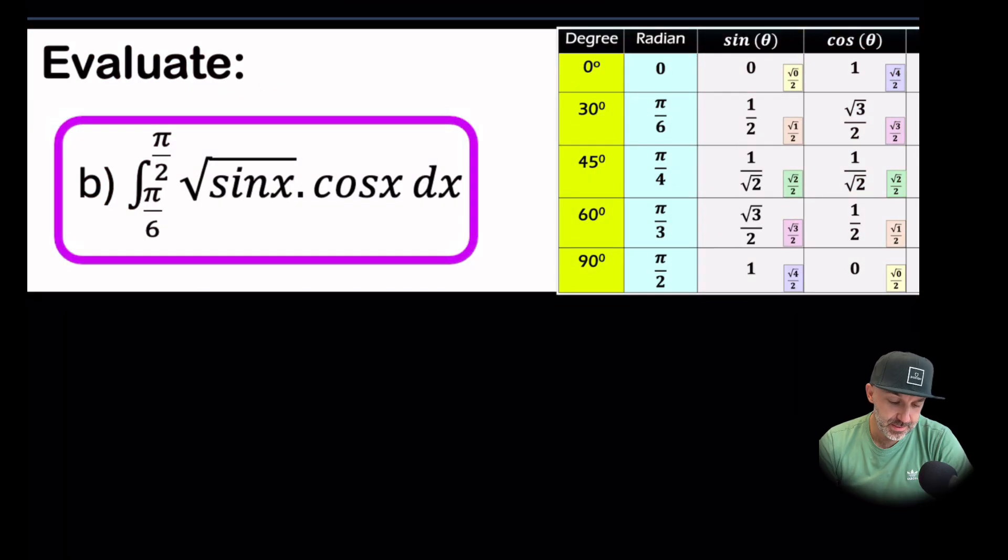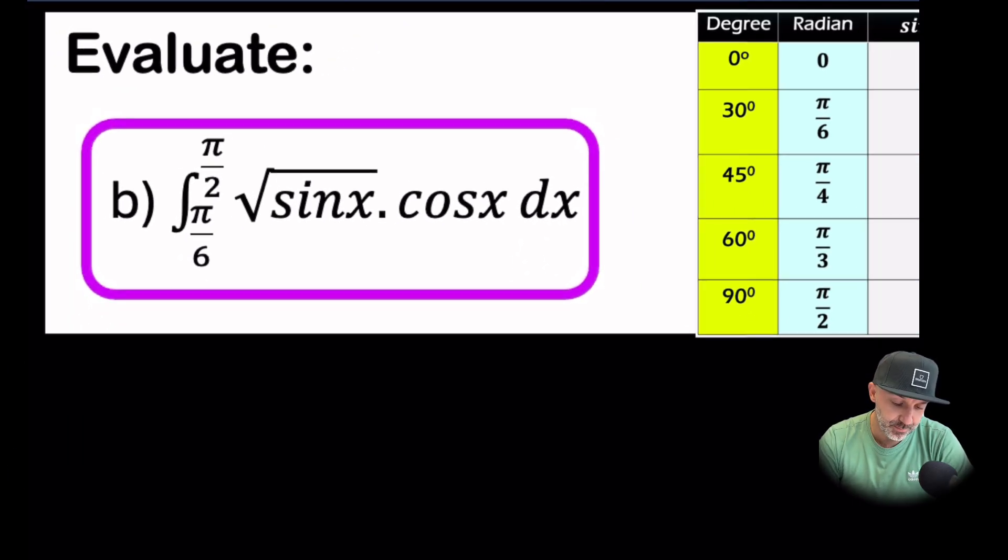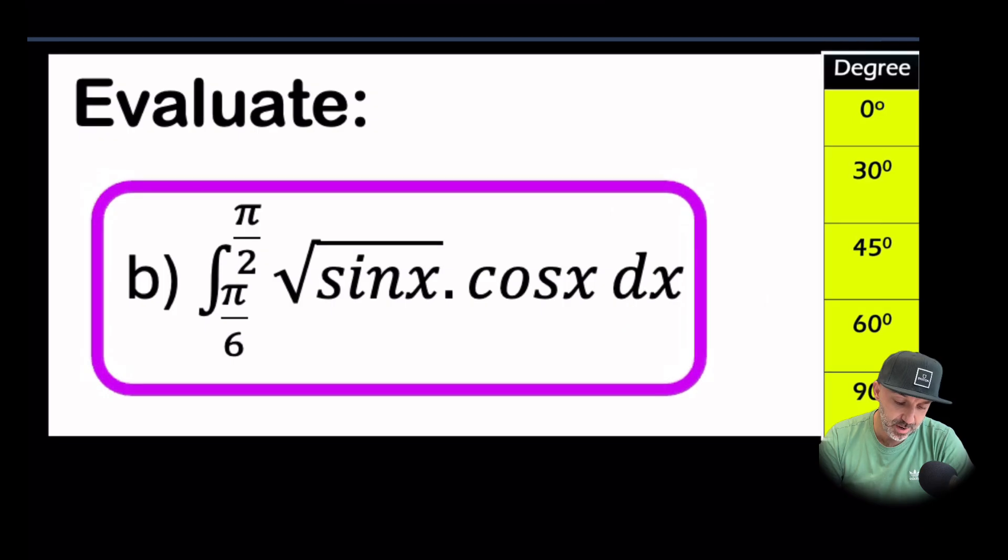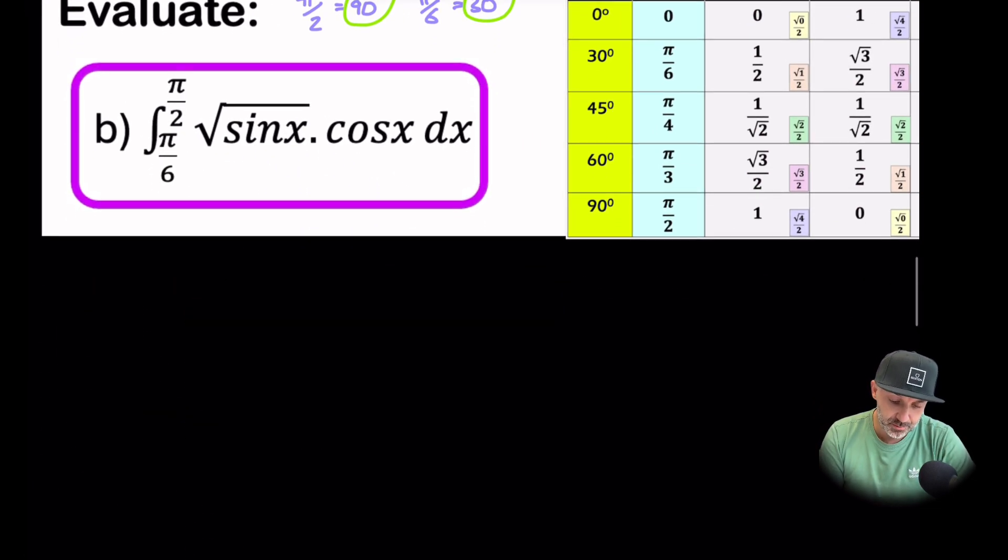Okay, so part b is one that involves trig functions. Same thing here. We have an integral with limits. Now don't be put off by those radians. I can just help you out here. If you're not doing radians in your course, then pi over 2 is simply 90 and pi over 6 is 30 degrees. So you can just use 30 degrees and 90 degrees if you prefer.